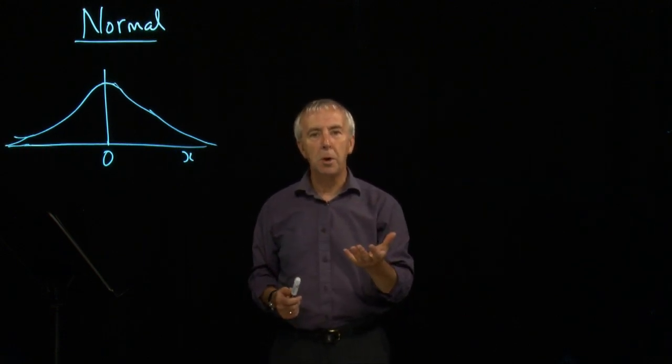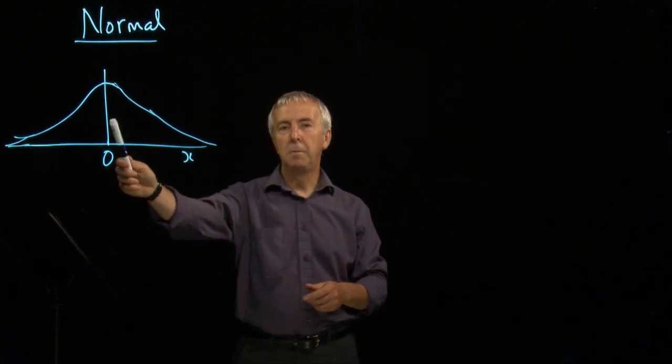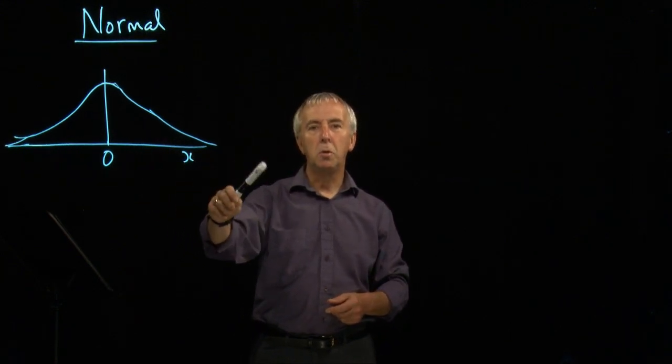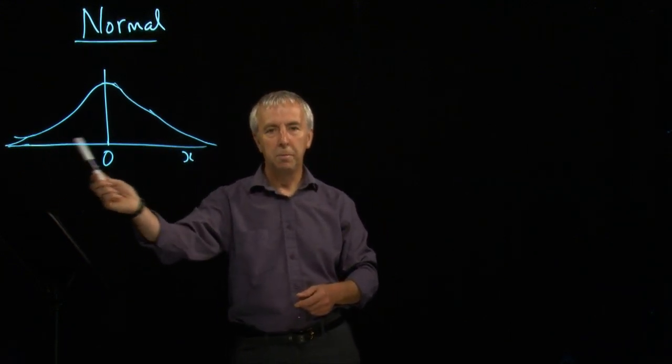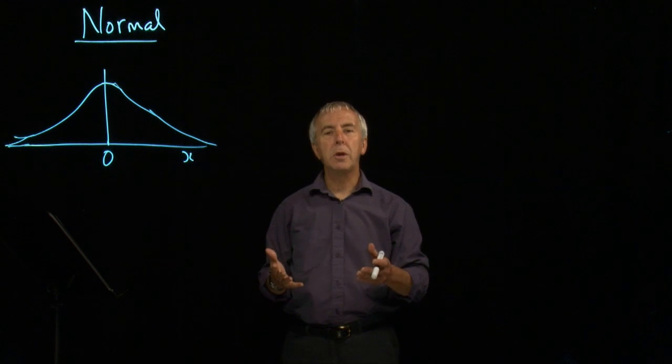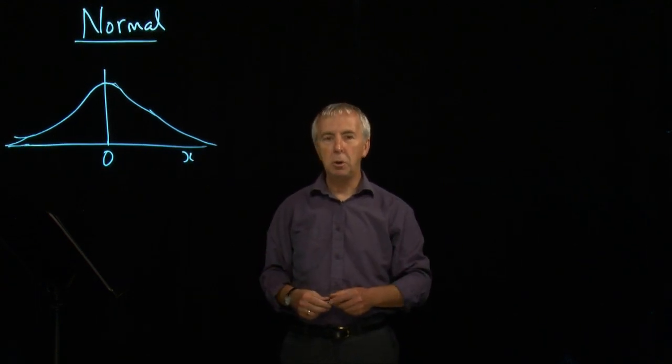to heights of a population. Most people are near the middle. There are a few very tall people, a few very short people. And all sorts of things that can be measured have a normal distribution.